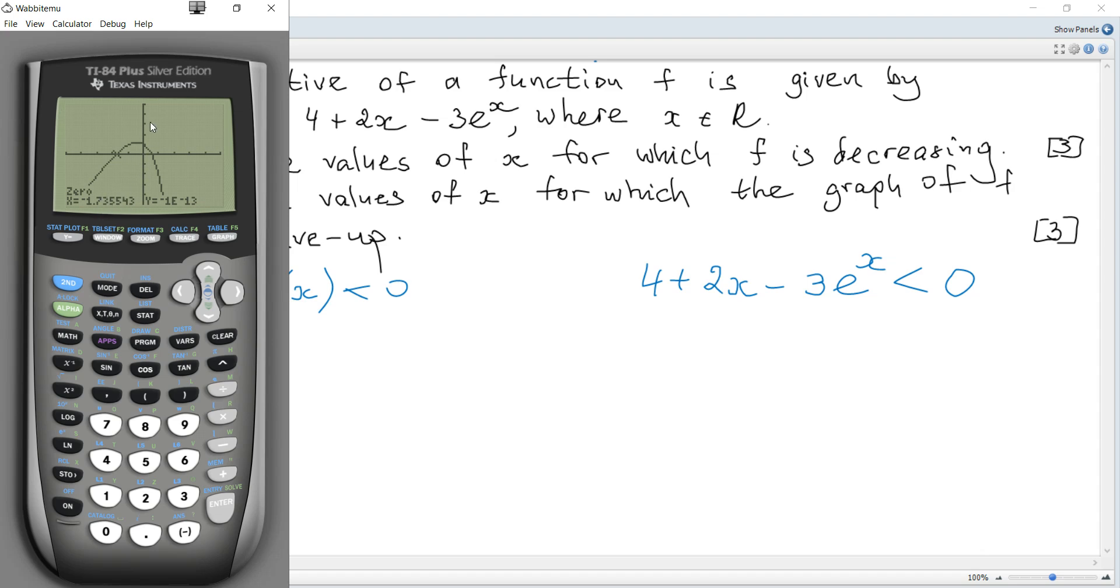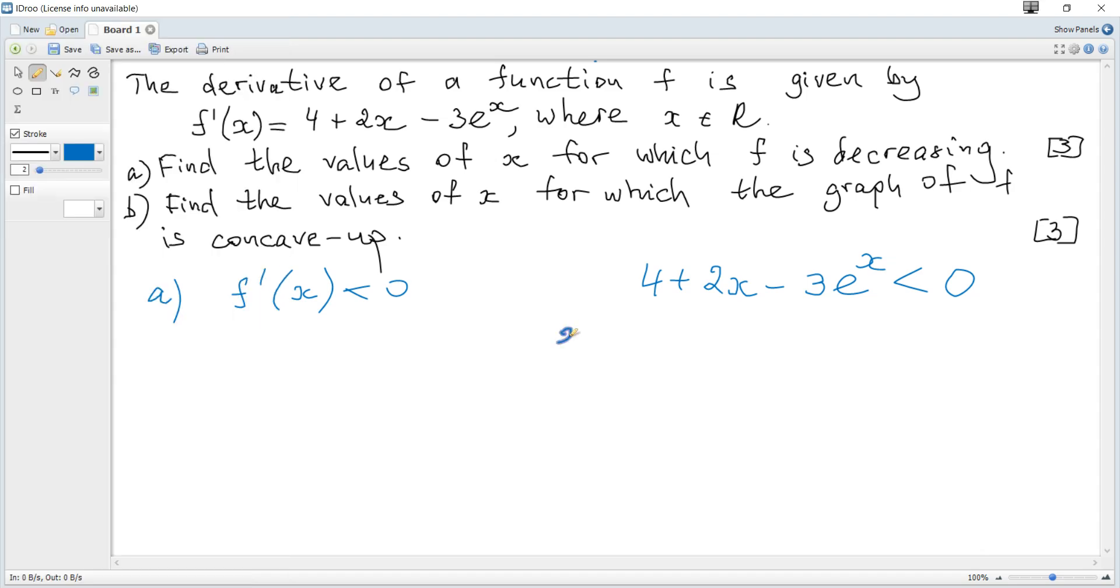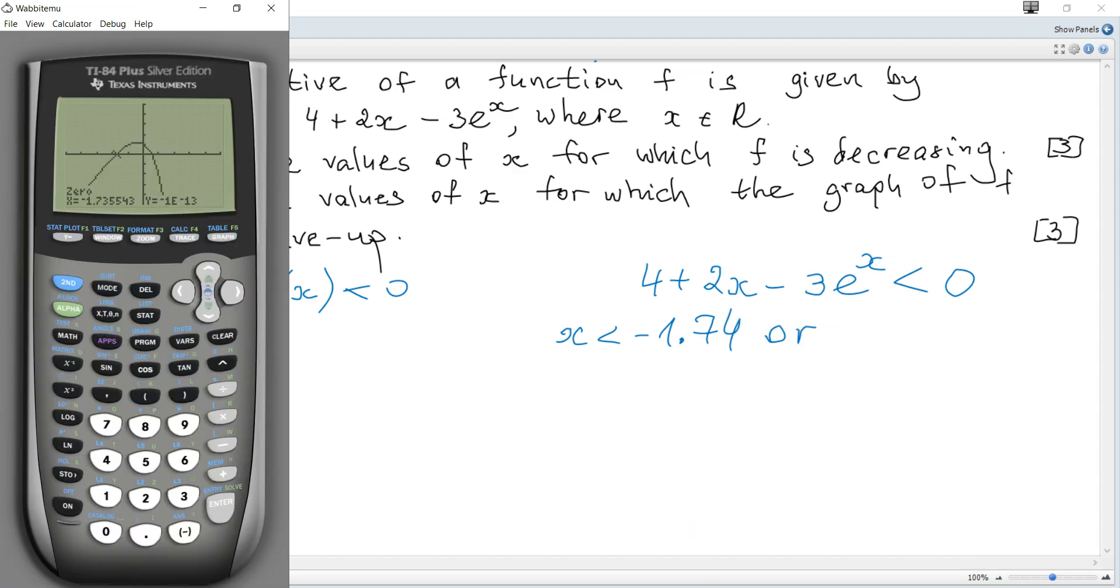We can see that the values of the function are negative. So x is less than negative 1.74, or from the second root and to the right to plus infinity.